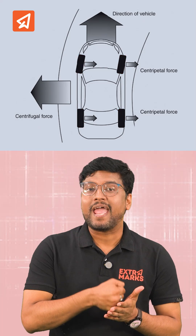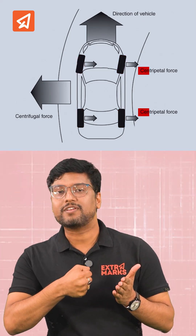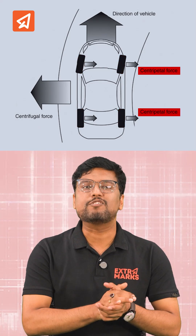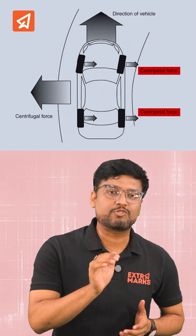We know that a fast-moving car can take a turn due to friction on a flat curved road. The tire grips the road, and this grip creates the centripetal force that pulls the car into the turn, preventing it from sliding straight.